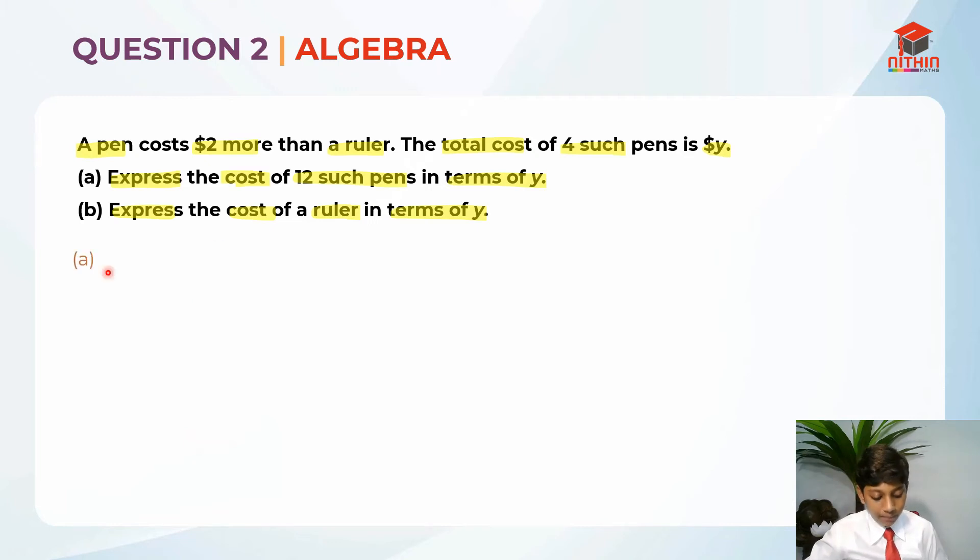Now, let's solve for part A. We know that 4 pens costs Y dollars. So, what does 12 pens cost? It costs 3Y dollars because 4 times 3 equals to 12 and Y times 3 equals to 3Y. When we times 3 one side, we should times 3 the other side as well. That is why we get 3Y dollars. This is the answer for part A.